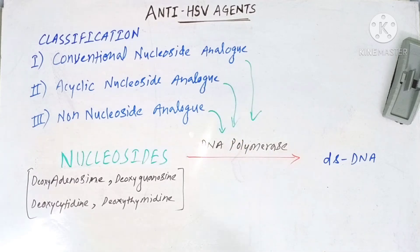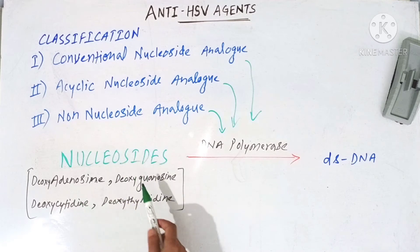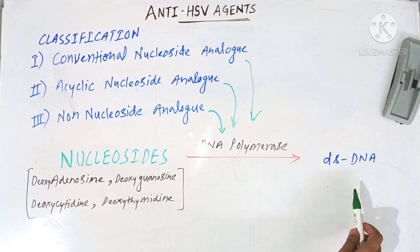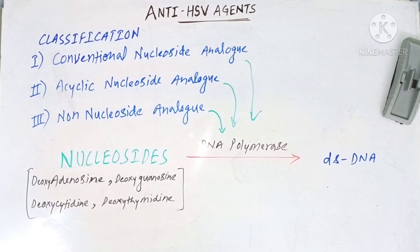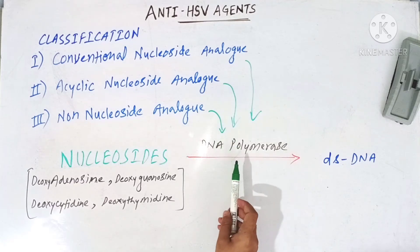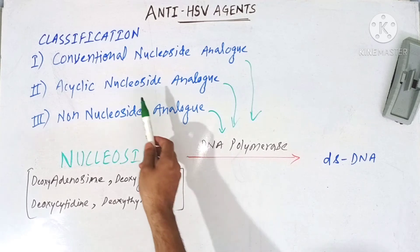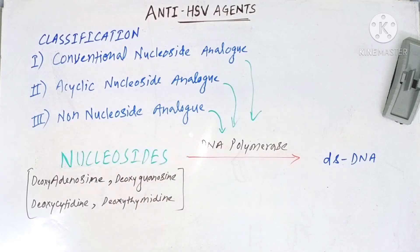All three categories of drugs inhibit the DNA polymerase enzyme. They compete with DNA polymerase for its active site, incorporating nucleoside analogs in place of naturally occurring nitrogenous bases to form a false DNA. That false DNA is unable to replicate, and in this way HSV virus replication is stopped and the infection is inhibited.